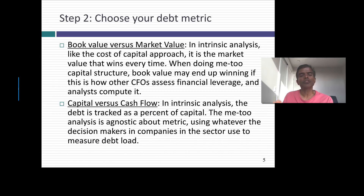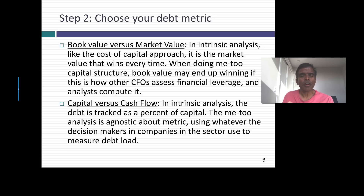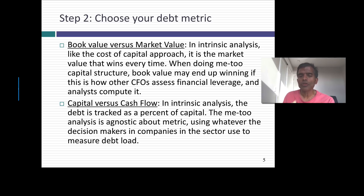The second step in the process is to find a debt metric that you're going to compare across these companies. You have two choices: do you want to use book value or market value, or debt as a percent of capital or debt relative to cash flow? When we did the cost of capital approach, our focus was entirely on debt to capital in market value terms. But because this is a peer group comparison, there is no right answer here — it depends on what everybody else is doing. So if CFOs and equity research analysts in the sector use debt to EBITDA as their proxy, that's what you focus on. If they use debt to capital in book value terms, you use book value.